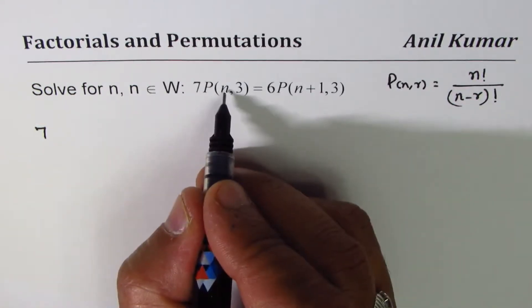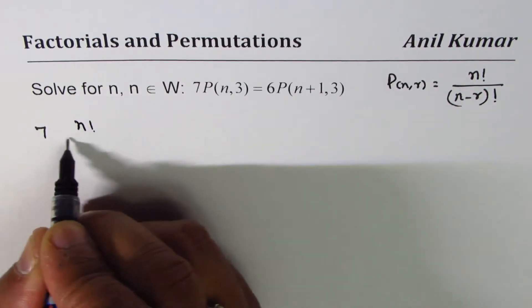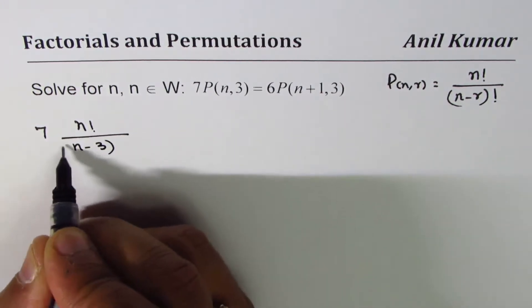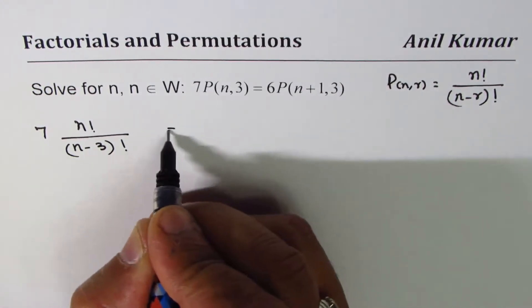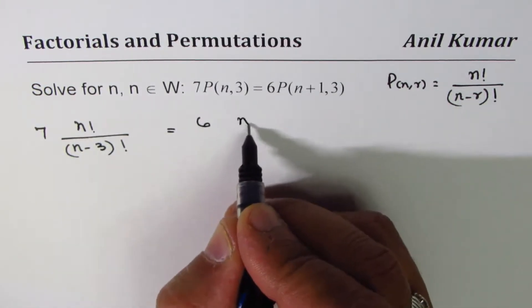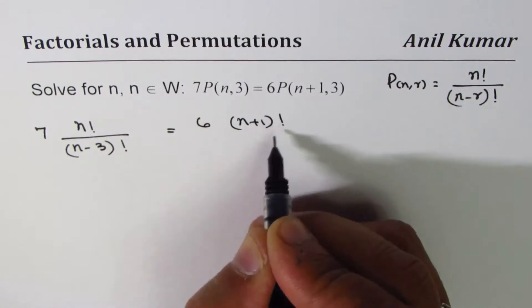This equals 6 times (n+1) factorial divided by... the denominator is (n+1) minus 3, which is (n-2) factorial.